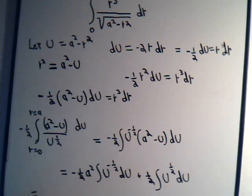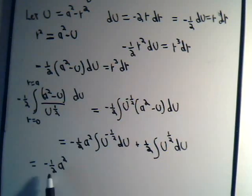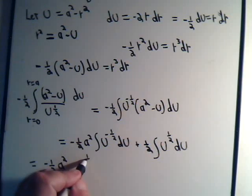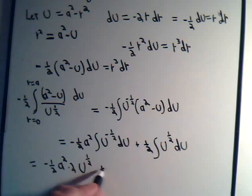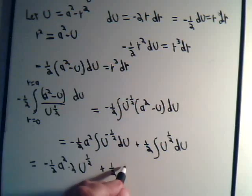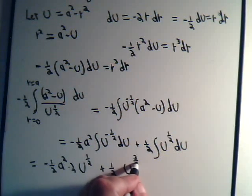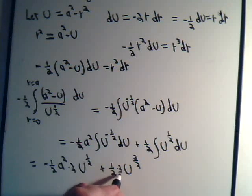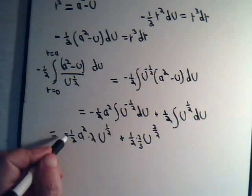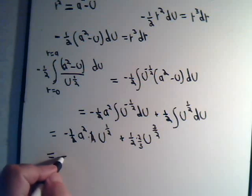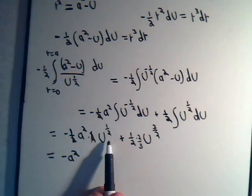This integral here. Minus one half a² U to the minus, let's get this in the view here. Minus one half a² U to the minus one half plus 1. That's U to the plus one half. And don't forget to divide by that exponent. So that's times 2. And here we have plus one half, that would be U to the three halves divided by three halves. So let's see what we have here. This is just minus a² times U to the one half.